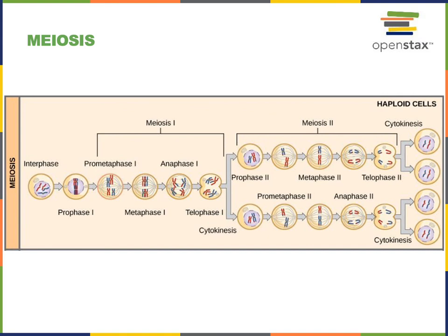Following telophase one, a cytokinesis step divides the cytoplasm, producing two new daughter cells. Each of those daughter cells contains 23 replicated chromosomes.